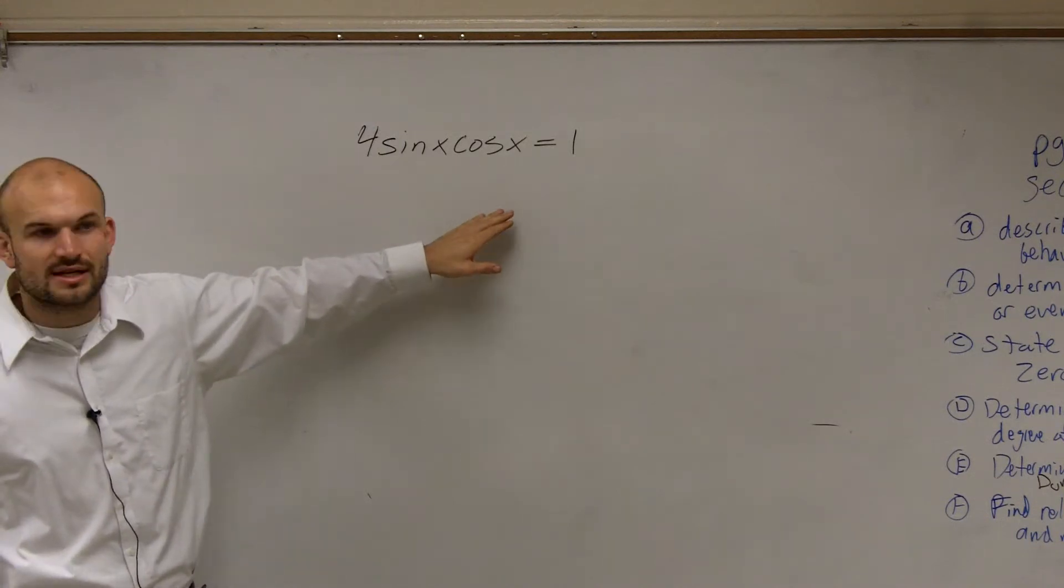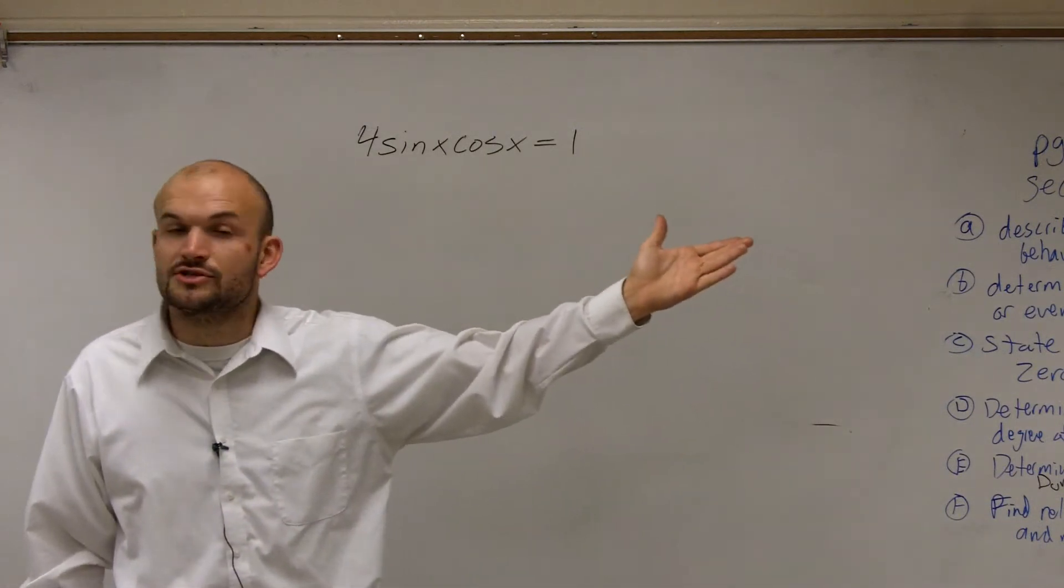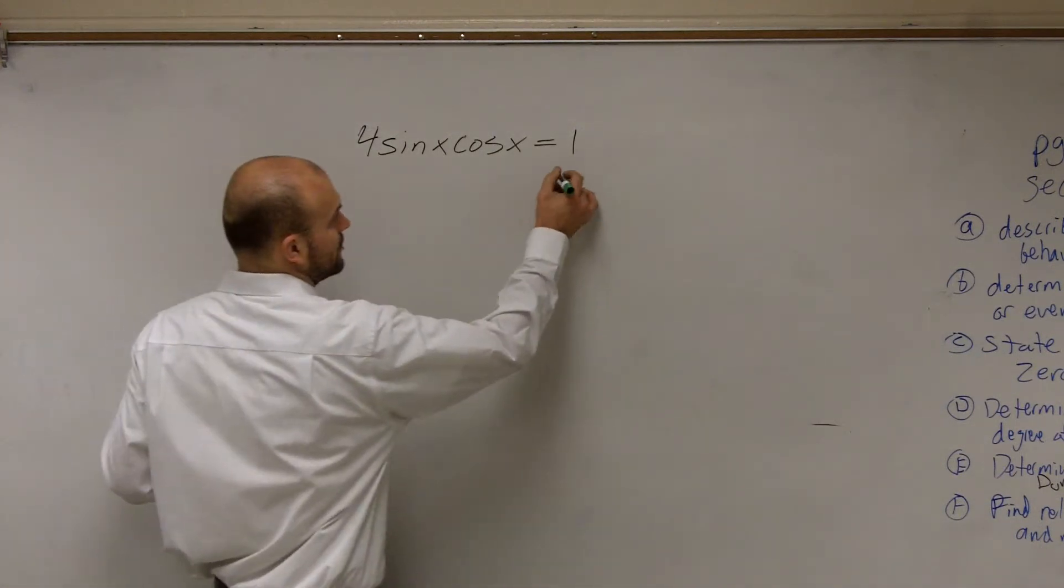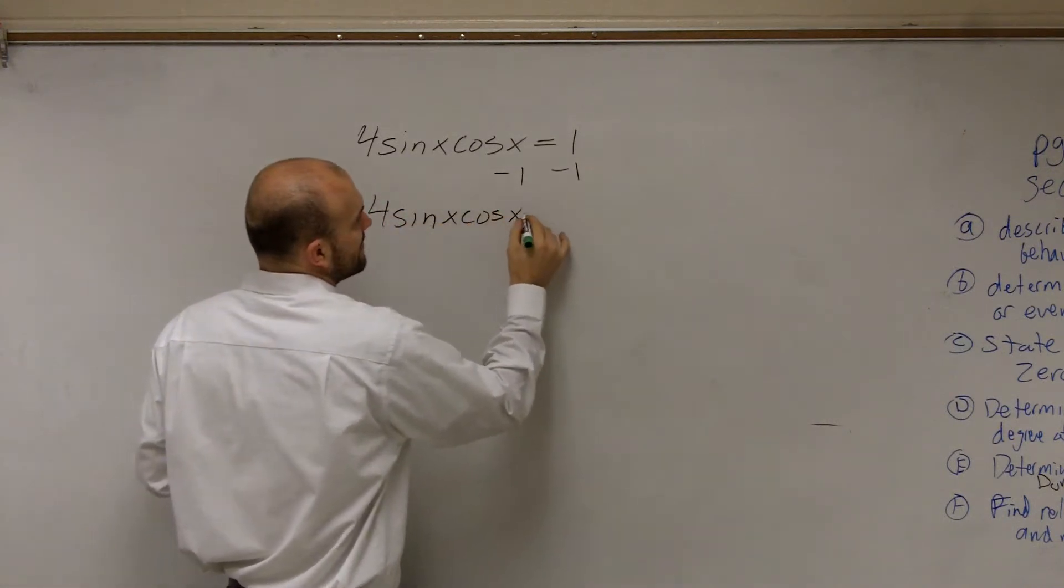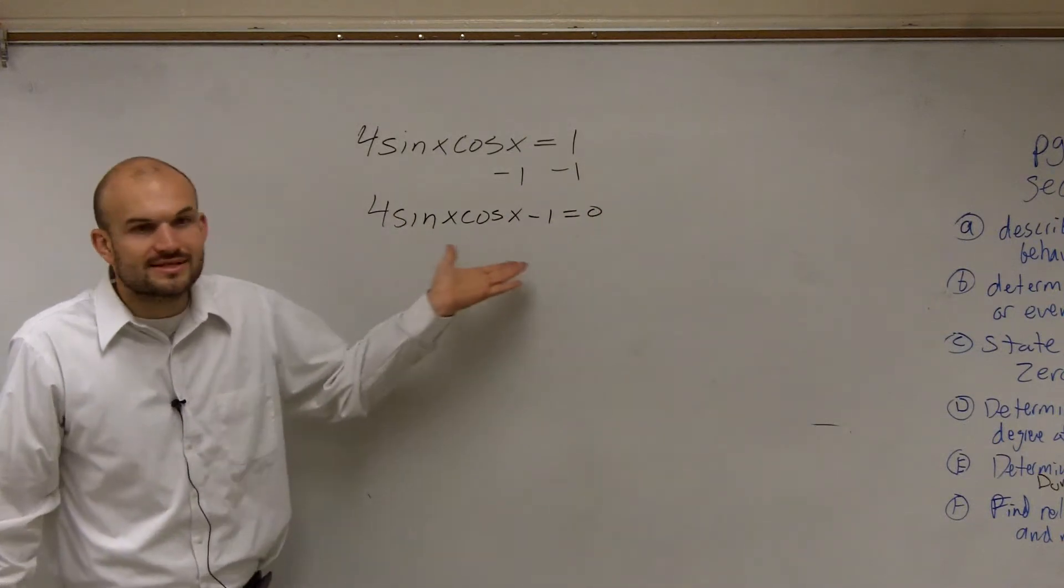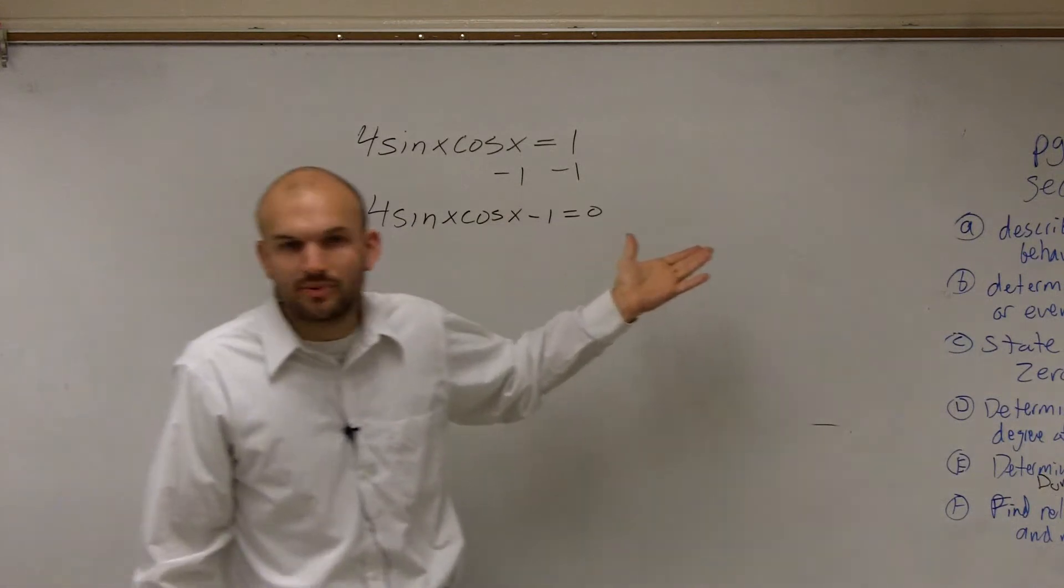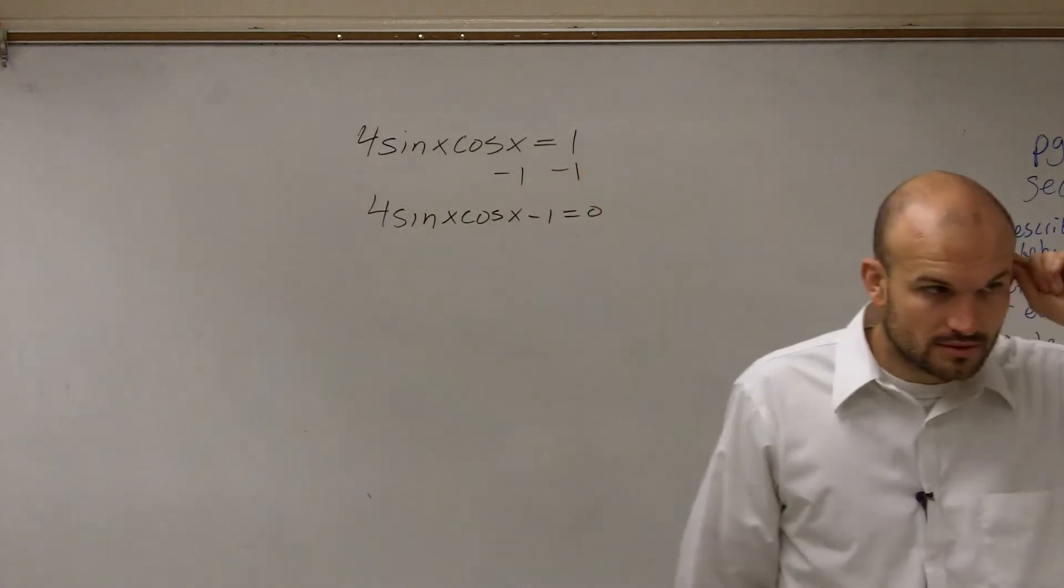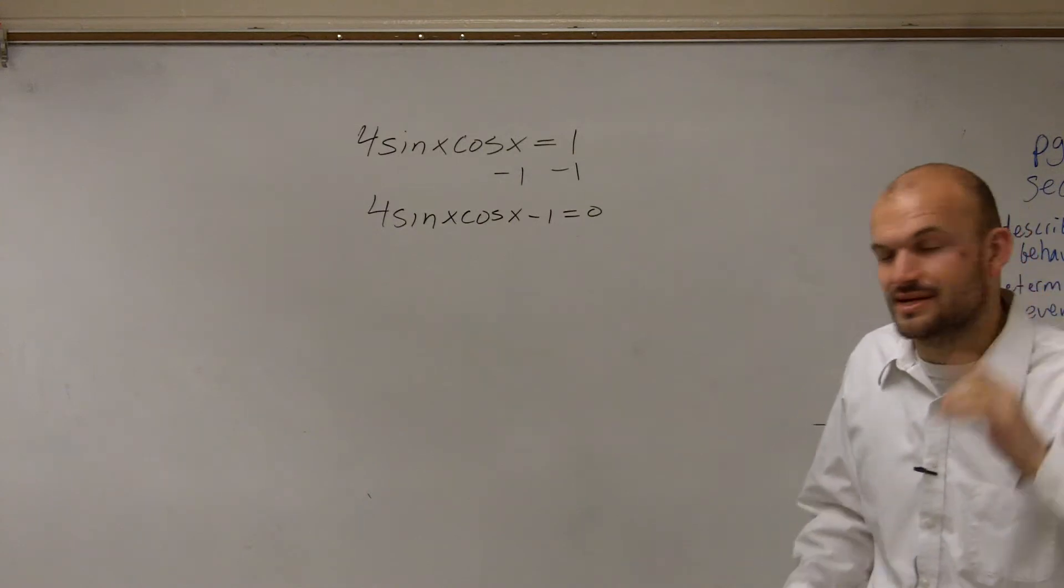Double angles or half angles or anything else that I could use. So a lot of times we say, well, to solve this, we can use zero product property. So I'll subtract 1 over here, and I say 4 sine of x cosine of x minus 1 equals 0. But now, what am I still going to try to do as far as trying to factor this so I can apply zero product property? And it's kind of getting a little tough. I'm kind of at a standstill. I don't really know what else I can work with.